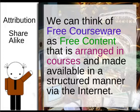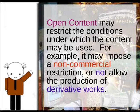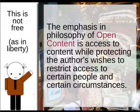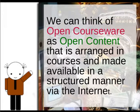We can think of free courseware as free content that is arranged in courses and made available in a structured manner via the internet. We can also imagine situations where content includes some but not all of these freedoms and where there may be additional restrictions imposed — we can call this open content. Open content may restrict the conditions under which it may be used; for example, it may impose a non-commercial restriction or not allow the production of derivative works. Such restrictions are mostly made out of ignorance, and this is particularly true with the non-commercial restriction. The emphasis in open content philosophy is on access while protecting the author's wishes to restrict access to certain people or circumstances. This is not free as in liberty. All free content is open content, but not all open content is free content.